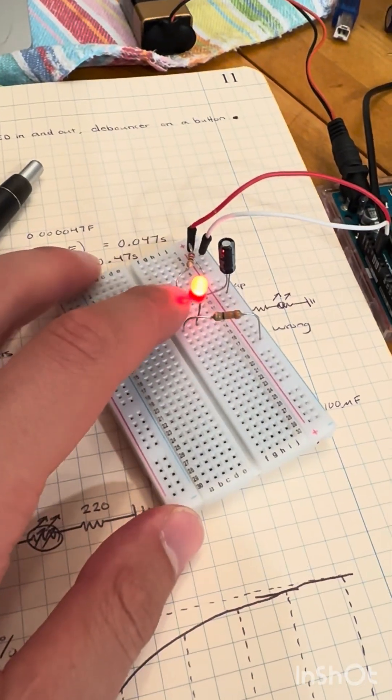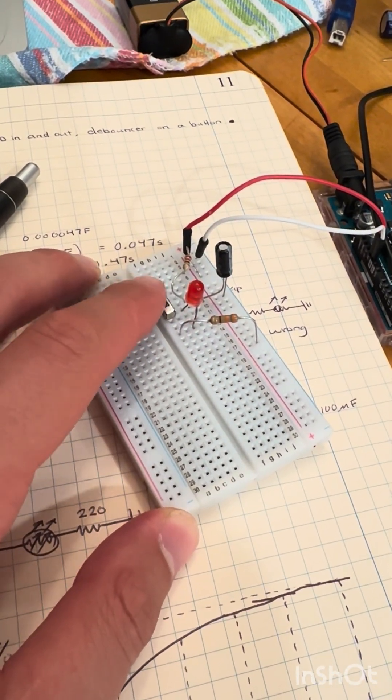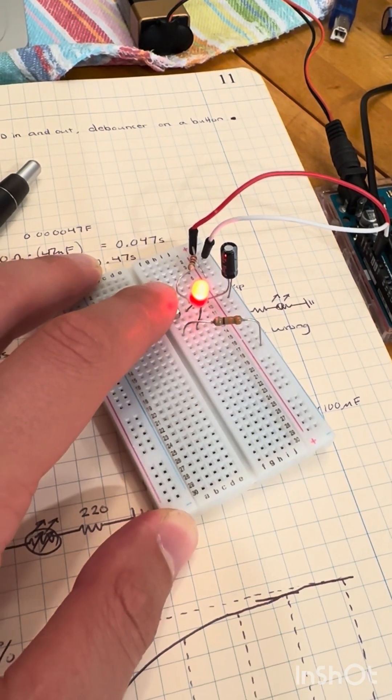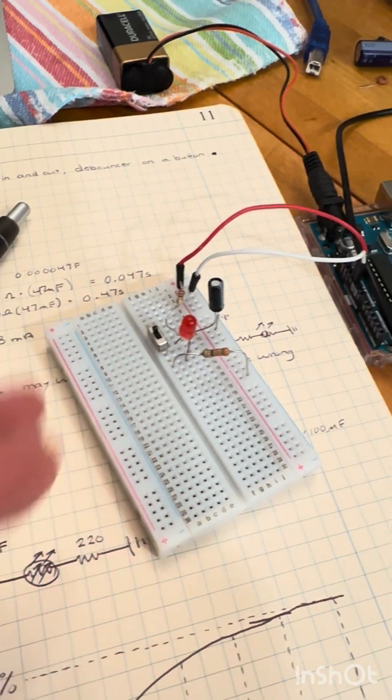Now the capacitor is charging up to 3 volts, it's not blocking the LED, and then when it turns off, it fades the LED out. But what would happen if you introduced a bigger capacitor?